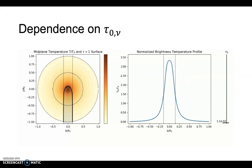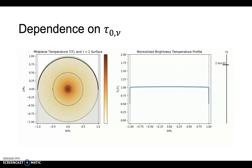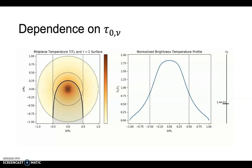When tau-naught is large, we see only the very edge of the disk and obtain a very boxy profile because the brightness temperature is just t-naught.